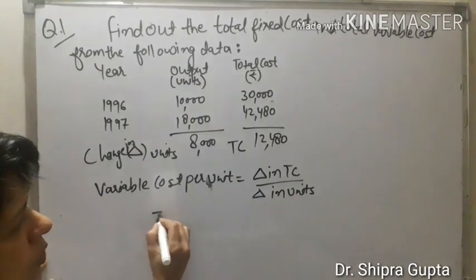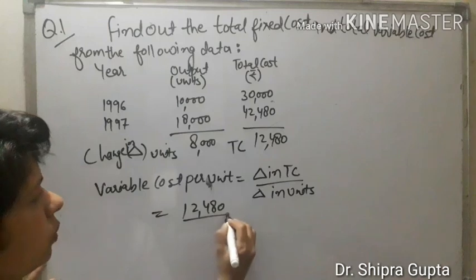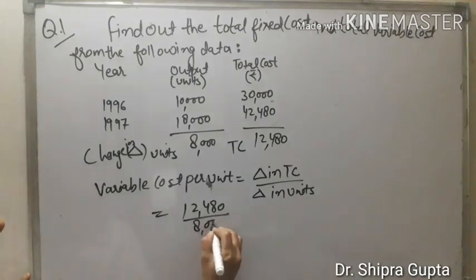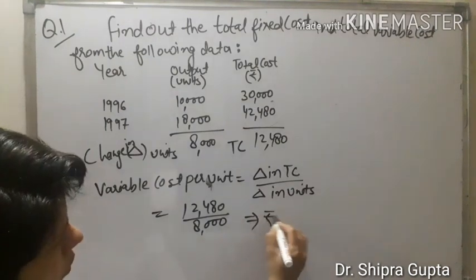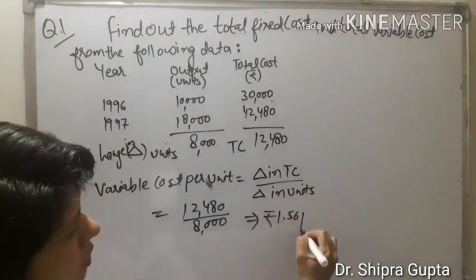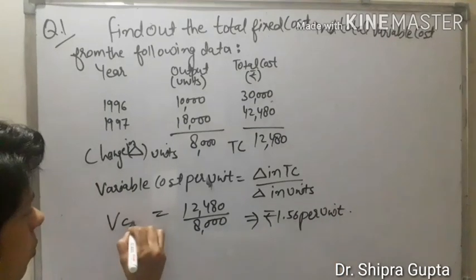We will put the values: change in total cost 12,480 divided by 8,000, which we will calculate. The answer is rupees 1.56 per unit variable cost.